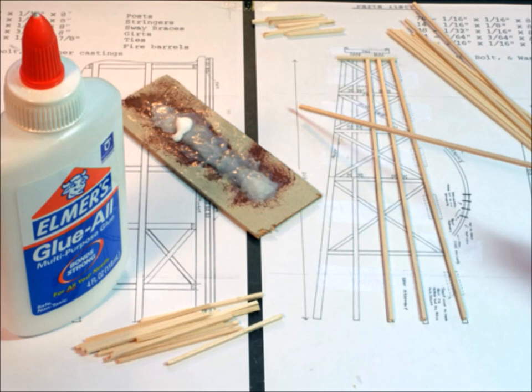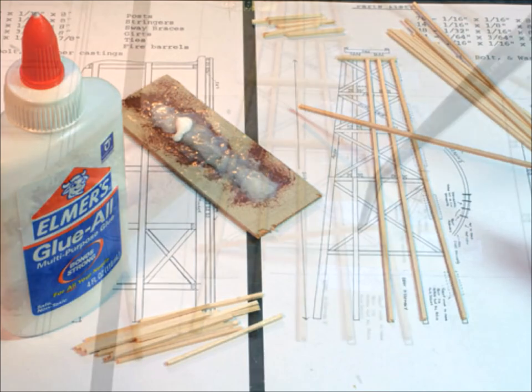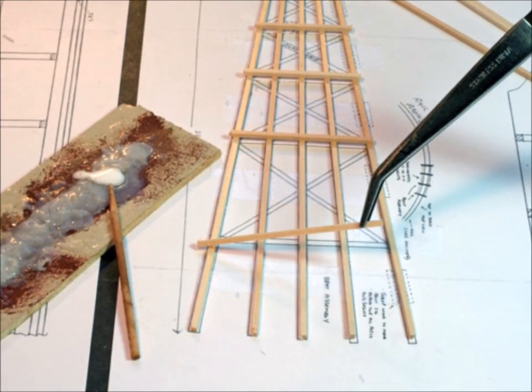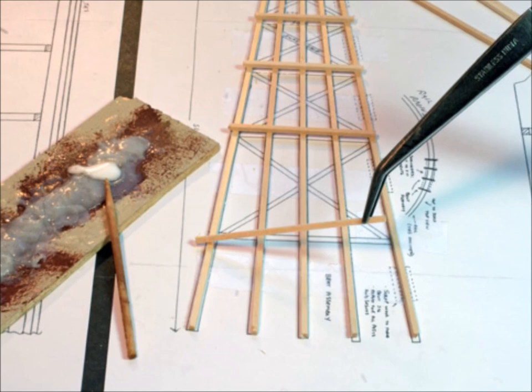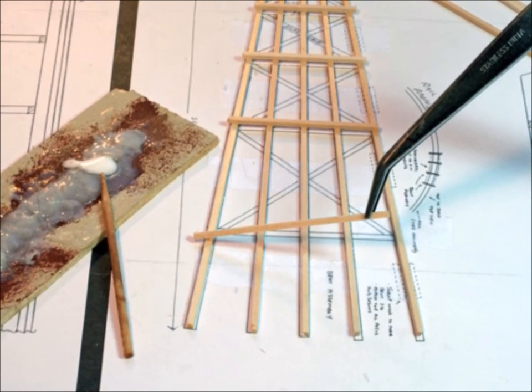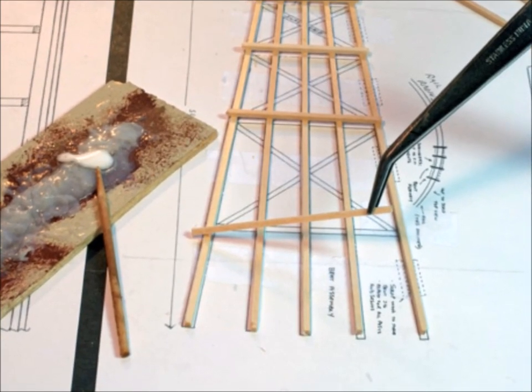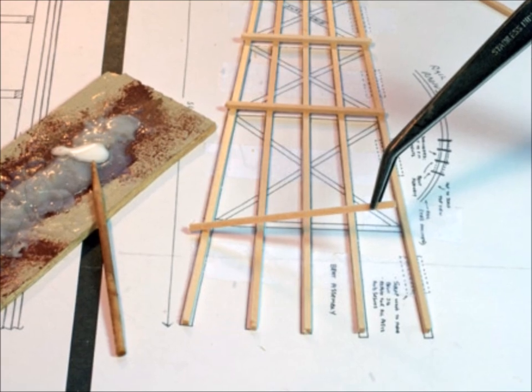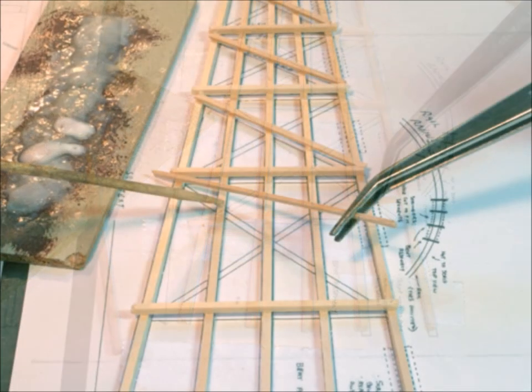So what you do is you put the double-sided tape on, you start putting your sticks right on top of it, you add a little bit of glue, and the picture tells you exactly where to put the different parts, tells you what size and exactly where to put them.